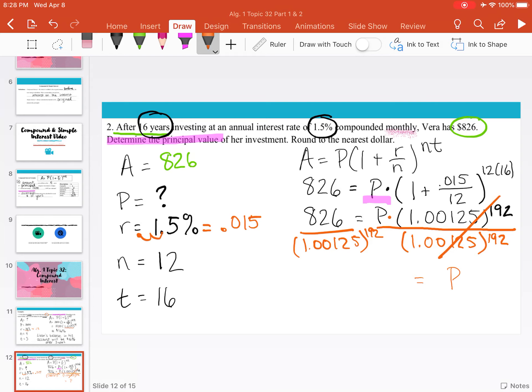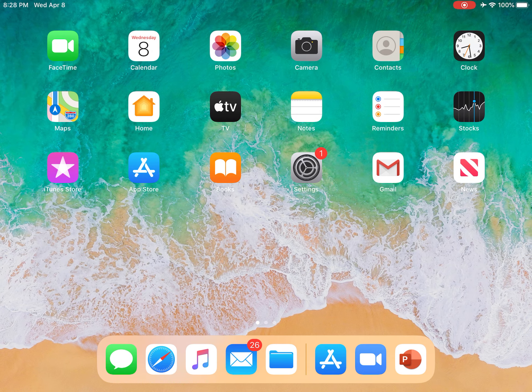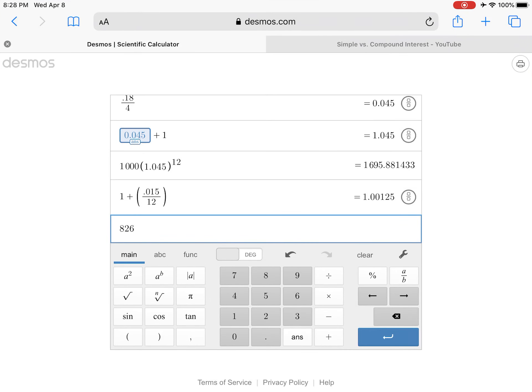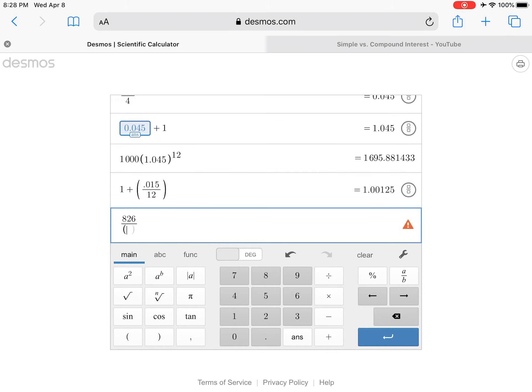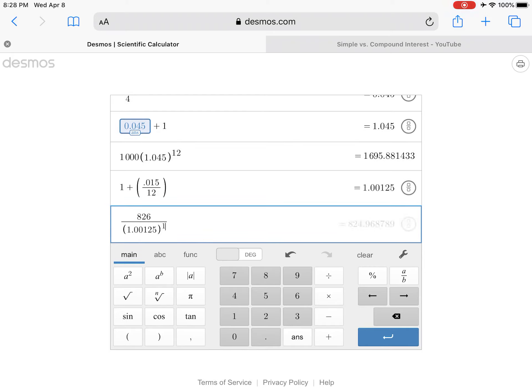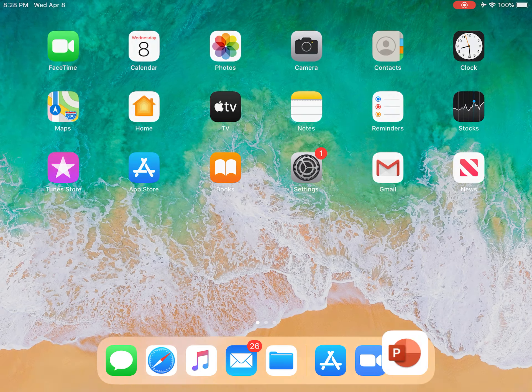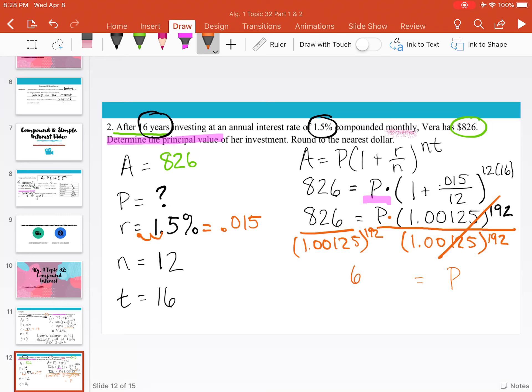On the left-hand side, we're going to need to divide. So we'll go back to Desmos, and we have 826 divided by, I'm going to use my parentheses again, 1.00125 raised to the 192nd power. This gives us approximately $650 if we round to the nearest dollar. So P is $650.